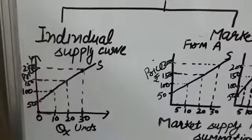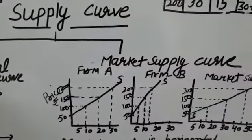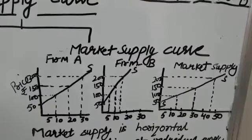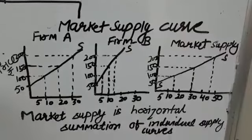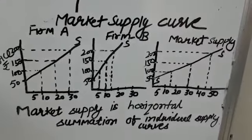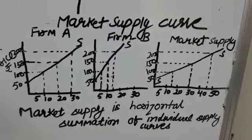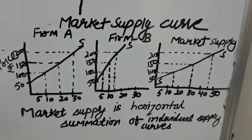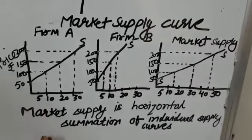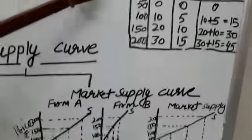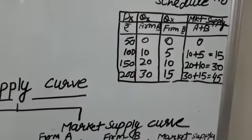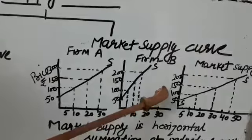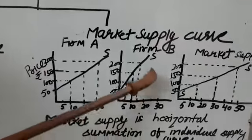Now, market supply curve. The market supply curve is a graphic presentation of the market supply schedule. It is the supply curve of the industry as a whole, and it is the horizontal summation of supply curves of all the firms in the industry. In the diagram, the first part shows the supply curve of firm A, and the second part shows the supply curve of firm B.